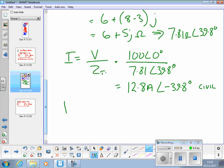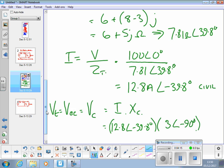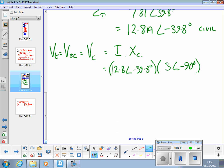So now, we can calculate VOC, which is V Thevenin's, which is equal to the voltage across the capacitor, in this case. That is equal to the current I times XC, which is 12.8 angle minus 39.8, multiplied by 3 angle minus 90 degrees, and the result of that multiplication, according to me, is 38.4 volts angle minus 129.8 degrees.